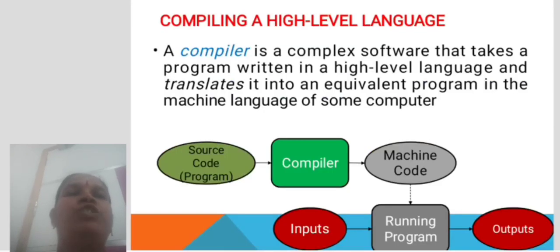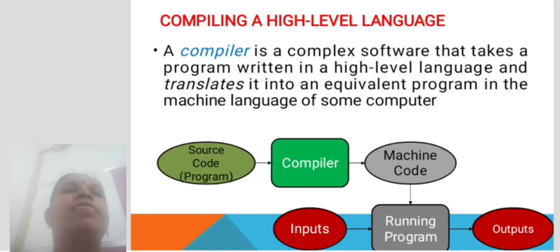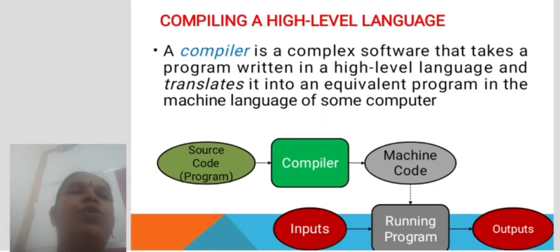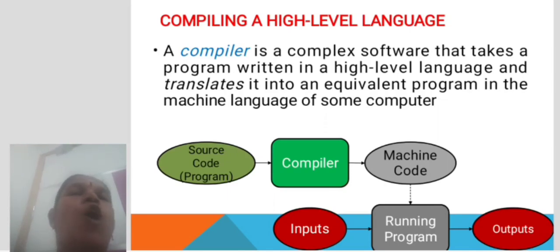Compiling a high-level language. A compiler is a complex piece of software that takes a program written in a high-level language and translates it into an equivalent program in the machine language of some computer. Source code goes into the compiler, the compiler converts it into machine code, and then running the program produces the output.